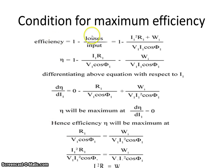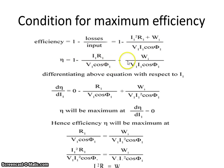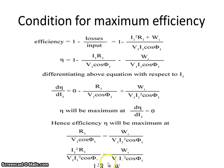The condition for maximum efficiency: efficiency equals 1 minus losses upon input, that is 1 minus (I1²·R1 + Wi) / (V1·I1·cosφ1). Then η = 1 − I1·R1/(V1·cosφ1) − Wi/(V1·I1·cosφ1). Differentiating with respect to I1 and setting dη/dI1 = 0, we get the condition for maximum efficiency: core loss equals copper loss, where copper loss is I1²·R1 and core loss is Wi. This concludes the discussion on maximum efficiency and the equivalent circuit of the transformer.